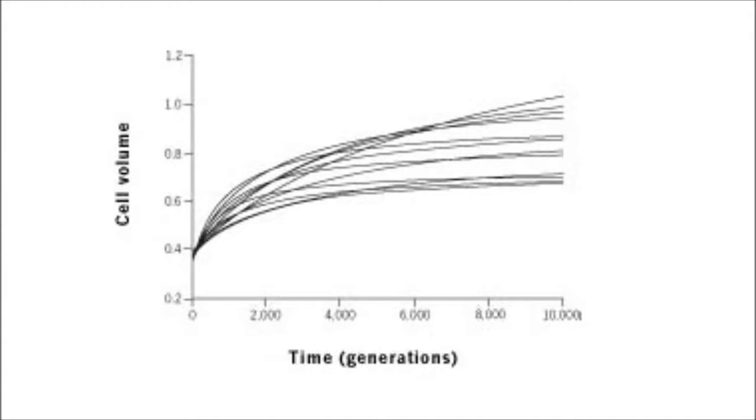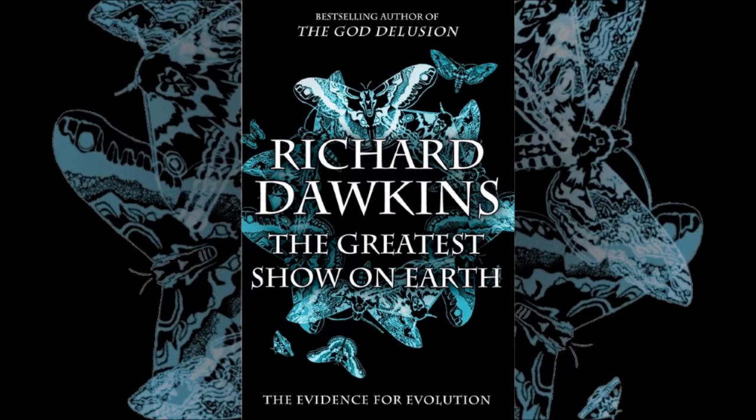Lensky and a different set of colleagues investigated this phenomenon by taking two of the tribes, called Ara plus one and Ara minus one, which seemed, over 20,000 generations, to have followed the same evolutionary trajectory and looking at their DNA.